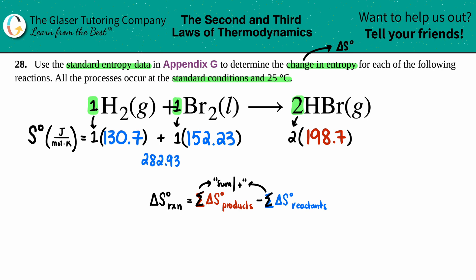And then for your product side, 198.7 times 2, I get 397.4. Let's plug it in. Delta S for the whole entire reaction is your products, which is 397.4, minus your reactants, so that's 282.93.